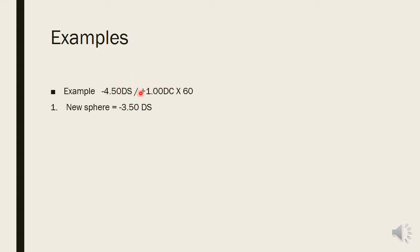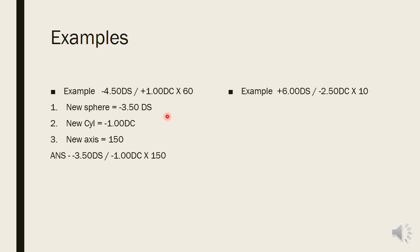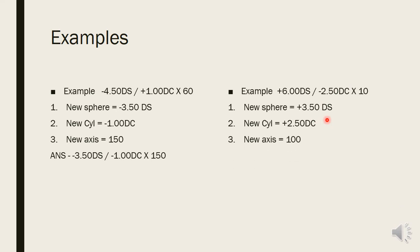Step two: change the sign of the cylinder — plus one becomes minus one diopter. Step three: axis is 60 degrees, less than 90, so add 90: 60 plus 90 = 150 degrees. New prescription: minus 3.5 with minus one at 150 degrees. One more example: plus six with minus 2.5 at 10 degrees. New sphere: plus six minus 2.5 = plus 3.5. New cylinder: plus 2.5. Axis 10 is less than 90, so 10 plus 90 = 100 degrees. New prescription: plus 3.5 plus 2.5 at 100 degrees.